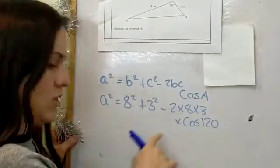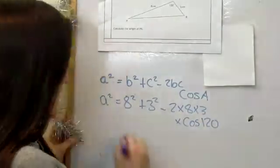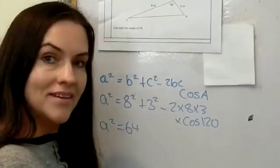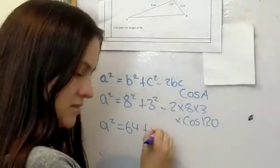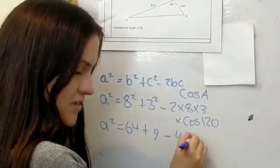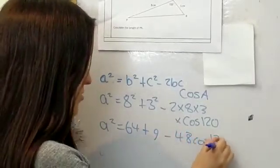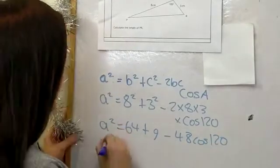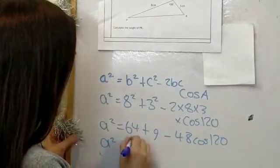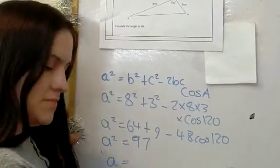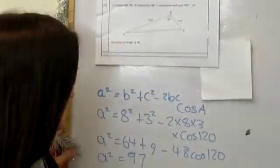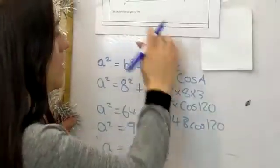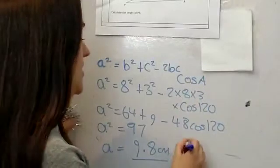Working it out: a² = 64 + 9 − 48 cos 120, which becomes a² = 97. Taking the square root gives a = 9.8, so PR = 9.8 centimeters.